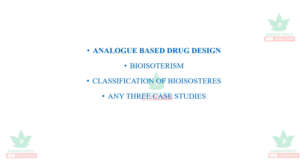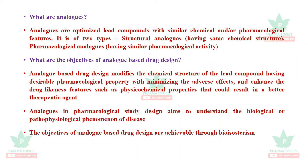The next section of Unit One is analog-based drug design, which includes bioisosterism, classification of bioisosteres, and case studies. Analogues are optimized lead compounds with similar chemical and/or pharmacological features. There are two types: structural analogues, which have the same chemical structure, and pharmacological analogues, which don't share similar structure but have similar pharmacological activity. Analog-based drug design modifies the chemical structure of a lead compound to retain desirable pharmacological properties while minimizing adverse effects.